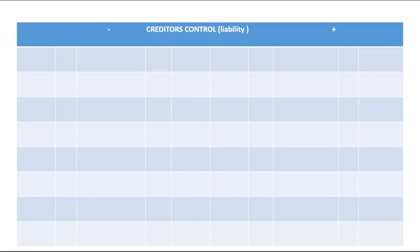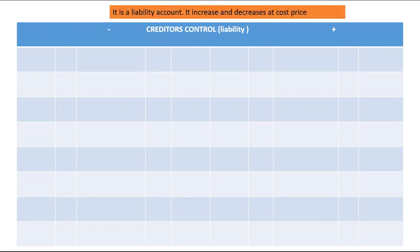The last account to discuss will be Creditors Control. As indicated, it will be minus-plus because it's a liability — it decreases on the debit side and increases on the credit side. This is a liability account and it represents purchases, so everything recorded here will be at cost price. It increases on the credit side whenever the business buys goods or other items on credit.